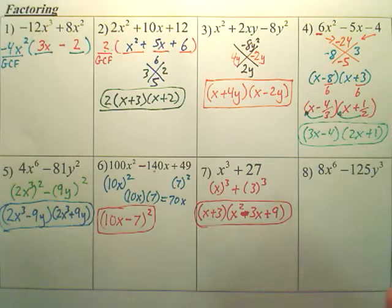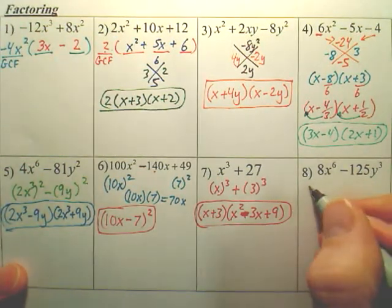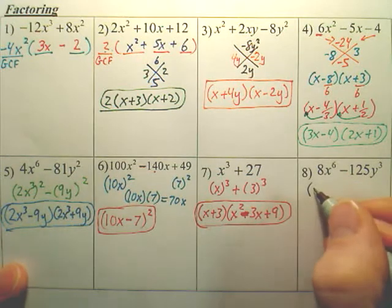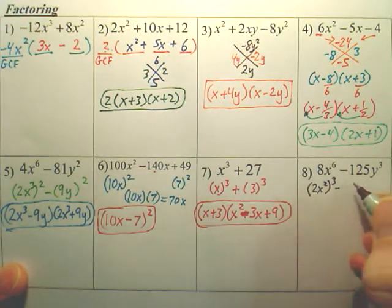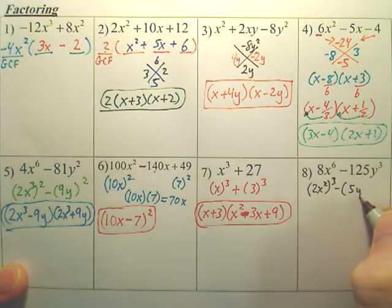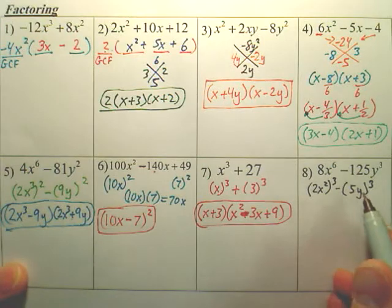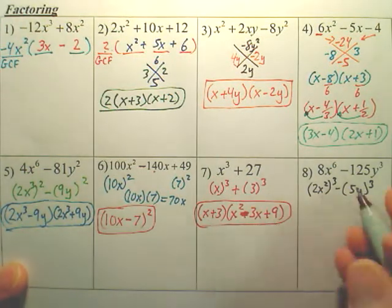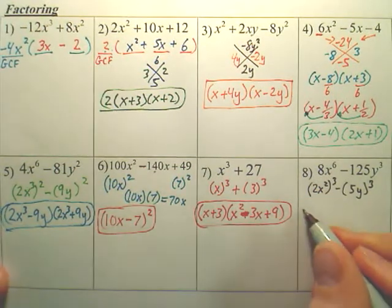And the last one. This one's also a difference of cubes. And the way I know it is, you just kind of got to break it down and realize this right here is 2x squared cubed. And this would be 5y cubed. So, those are my two cubes. And it's a difference of cubes. It's very similar to this one, except the plus and minus is switched.